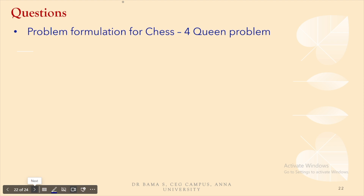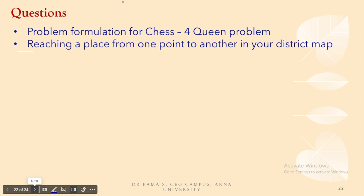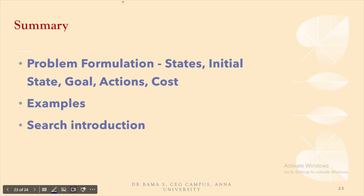Question 1: provide the problem formulation for chess — specifically the four-queens problem, where you have to place four queens on a chessboard such that none of them interact with each other. Question 2: if you are at one point in your district and have to reach another, how will you represent that in terms of the state space? As a summary: we covered problem formulation using five aspects — state, goal, action, cost, and initial state — with four examples, and gave a brief introduction to search. In the next module, we will cover uninformed search in detail. Thank you.